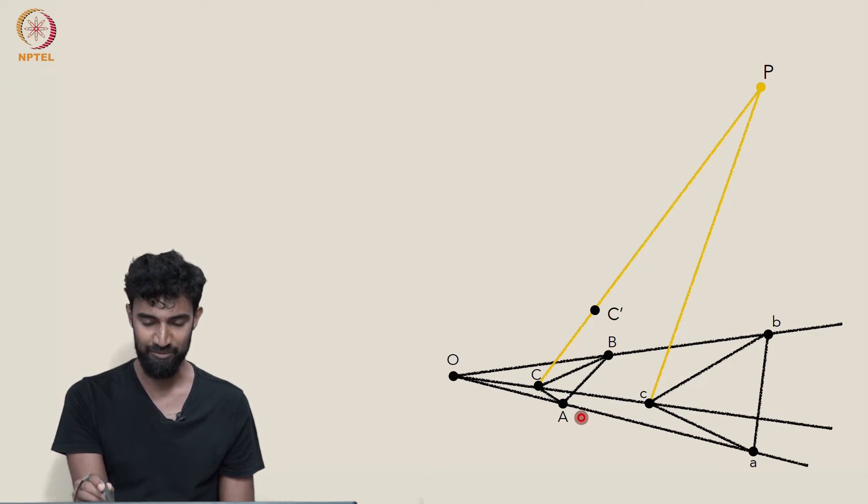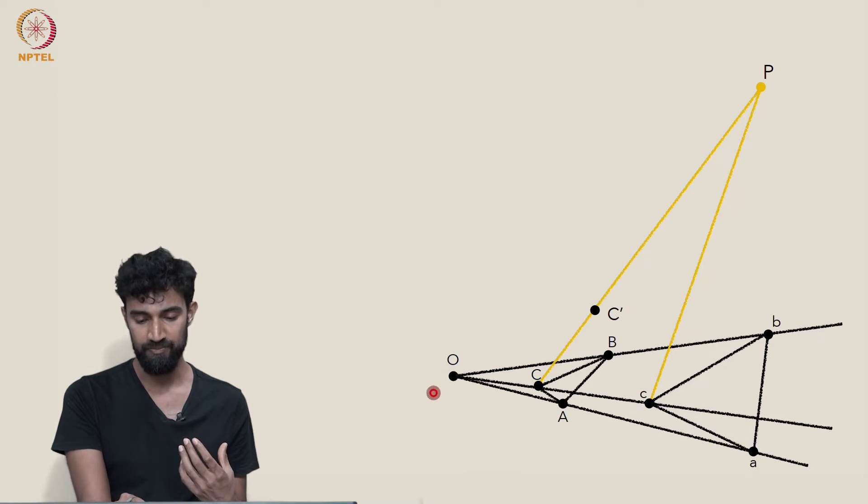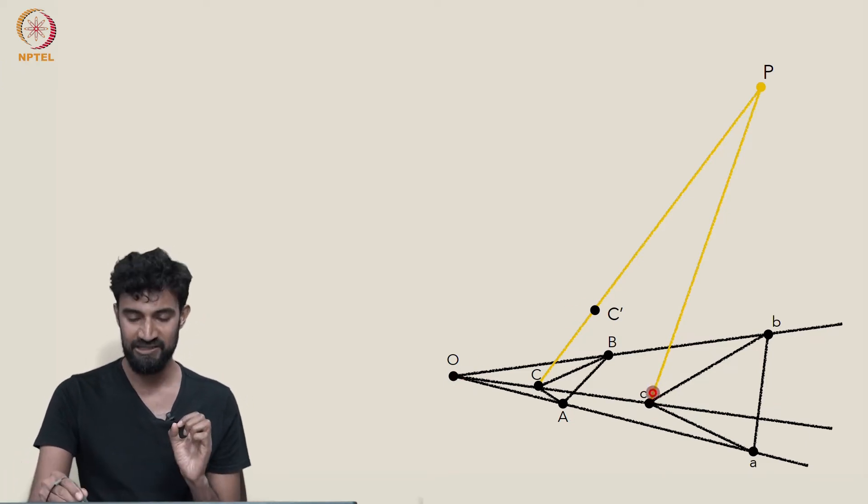Because notice we have a problem here. We want our two triangles to be in perspective from the point O. Well, this new C prime is not associated to any other point via O. So we have to lift little C up,